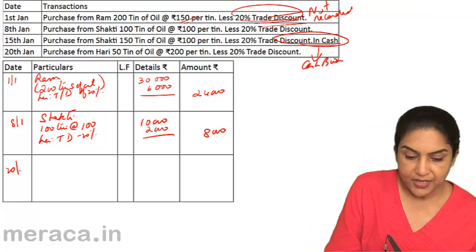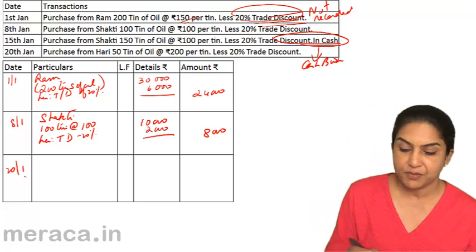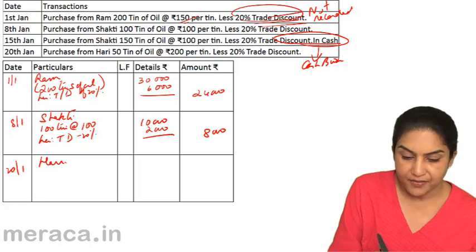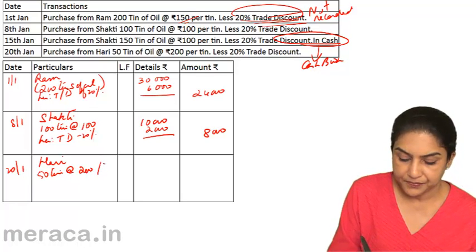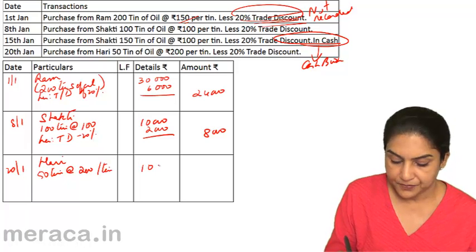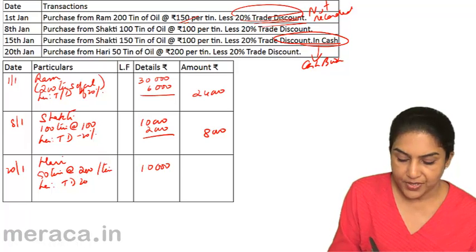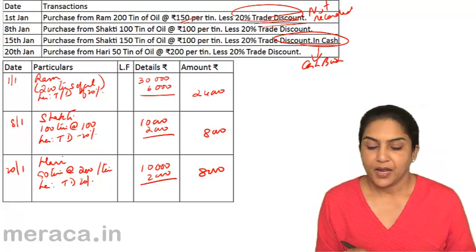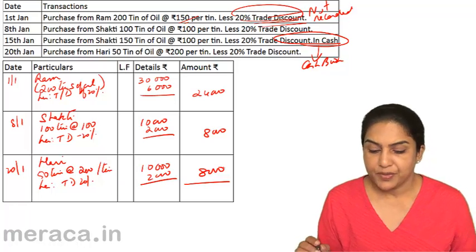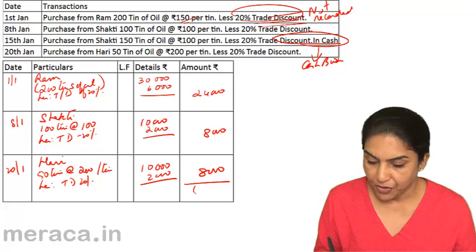On 20th January, we have purchased from Hari, 50 tins of oil at the rate of 200 per tin. So we have Hari — 50 tins at the rate of 200 per tin, that is 10,000 less trade discount of 20%, giving 8,000. If we total this, assuming there were no other transactions during that month, we will get 40,000.